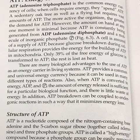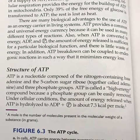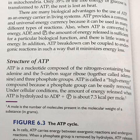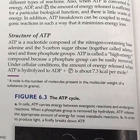Only 39% of the free energy of glucose is transformed to ATP. The rest is lost as heat. There are many biological advantages to the use of ATP as an energy carrier in living systems. ATP provides a common and universal energy currency because it can be used in many different types of reactions. Also, when ATP is converted to energy, ADP and P, the amount of energy released is sufficient for a particular biological function, and there is little waste of energy.